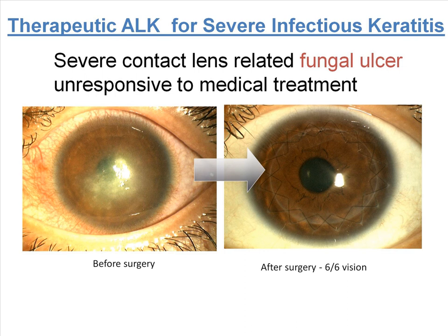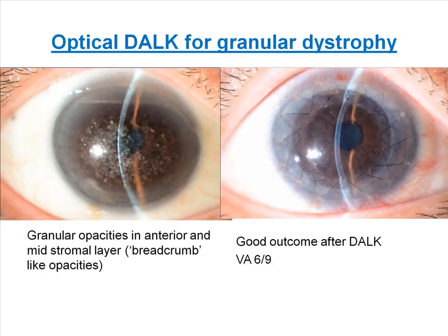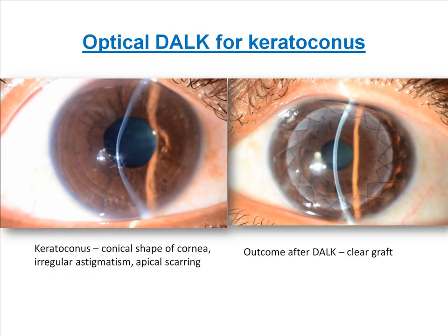Anterior lamellar keratoplasty can be performed for therapeutic reasons, such as in cases of severe fungal infection not responding to medical treatment. However, more commonly it is performed for optical reasons, such as stromal dystrophies, as well as for keratoconus which may have failed more conservative forms of treatment such as rigid gas permeable lenses.